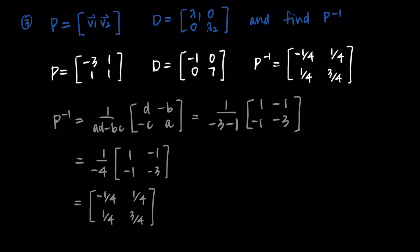So the matrix A we started with can be rewritten as three matrices: P times D times P inverse, where P, D, and P inverse are as written here. That is how we find the diagonalization for a 2 by 2 matrix. That's it for this one — thanks so much for watching, and I will talk to you in the next one.